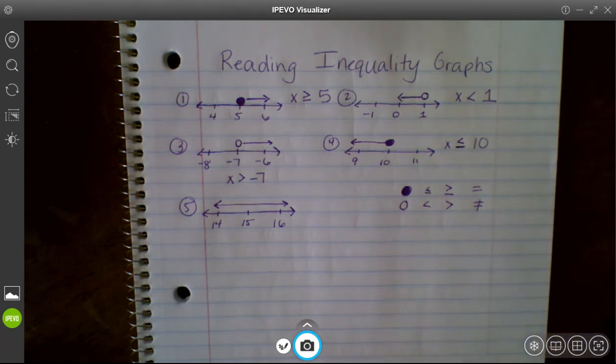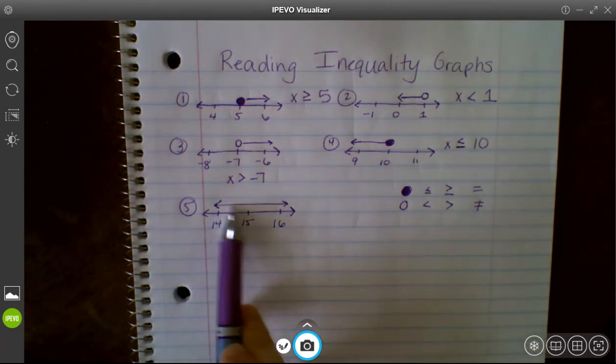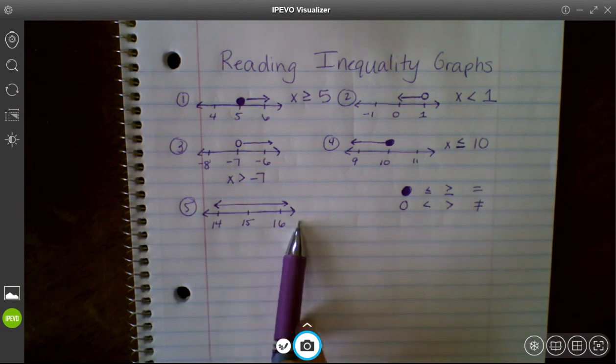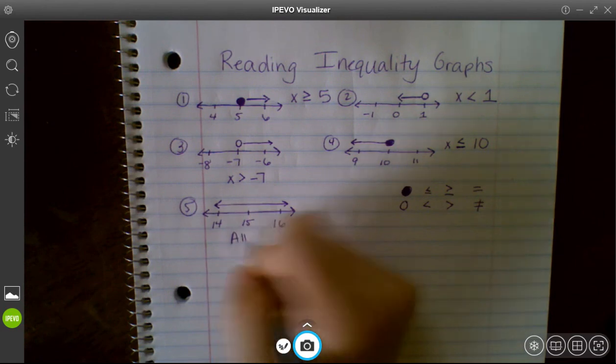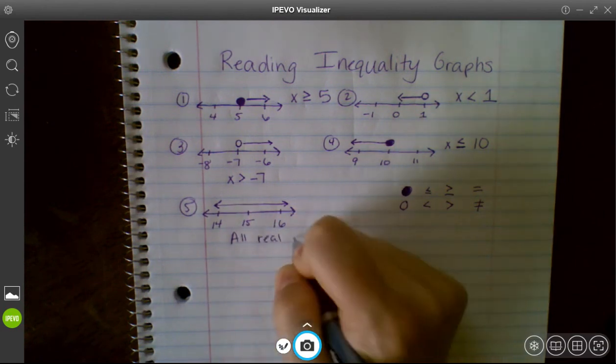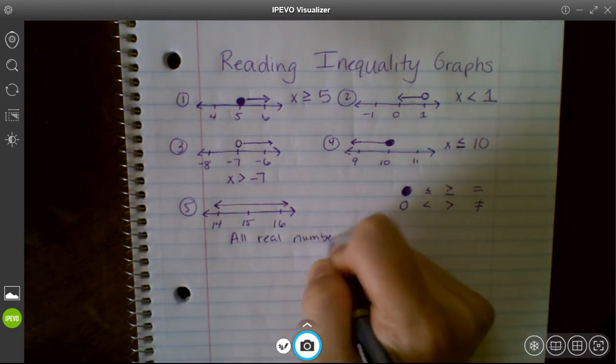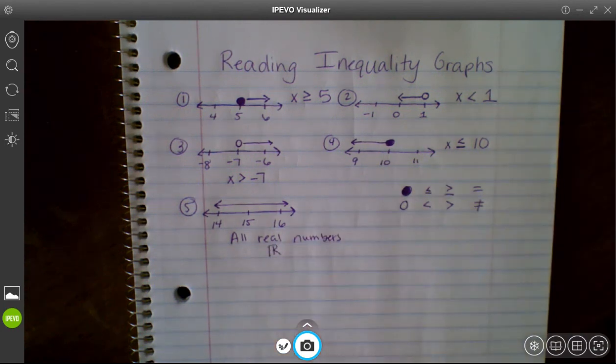So this last one is a unique one. If you look, there is no dot. It colors the whole line. So if you remember, we talked about two additional types of solutions. We talked about no solution and all real numbers. So in this case, if this line is going to go forever along with my number line, then that means all numbers work. So I would say it's all real numbers, or if you remember, it's that unique R that we write. So this is how we read a graph that's an inequality, and we write it.